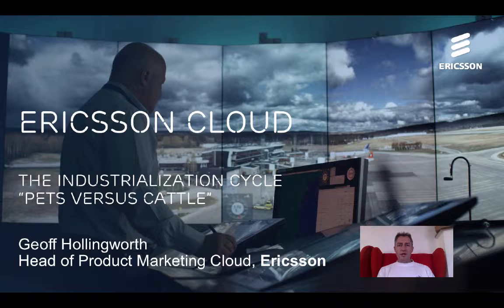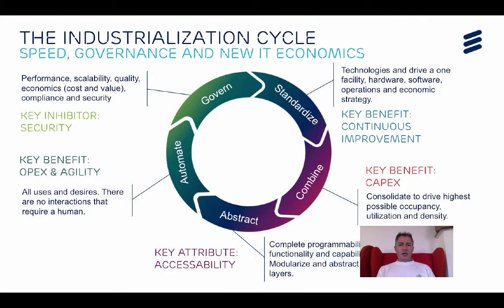And to do that, we're going to use the analogy of pet versus cattle. So there's a cycle that all industries go through, not only the technology industry, to optimise operations and to really industrialise the process. And what we're going to do to understand this is actually use the analogy of pets versus cattle.